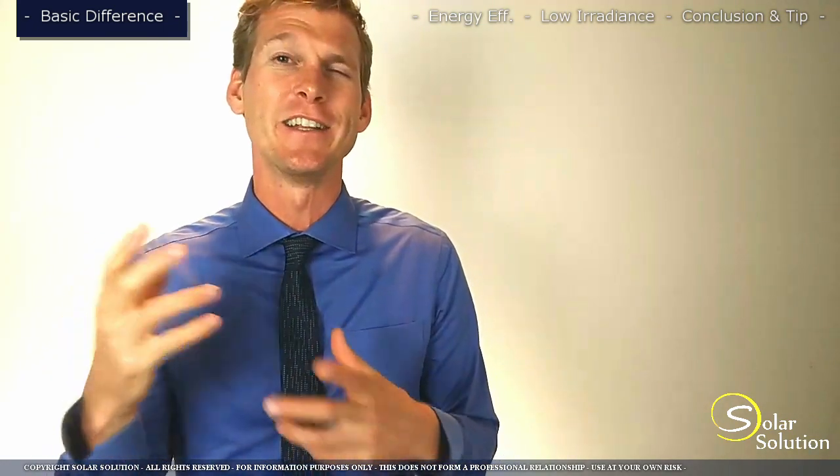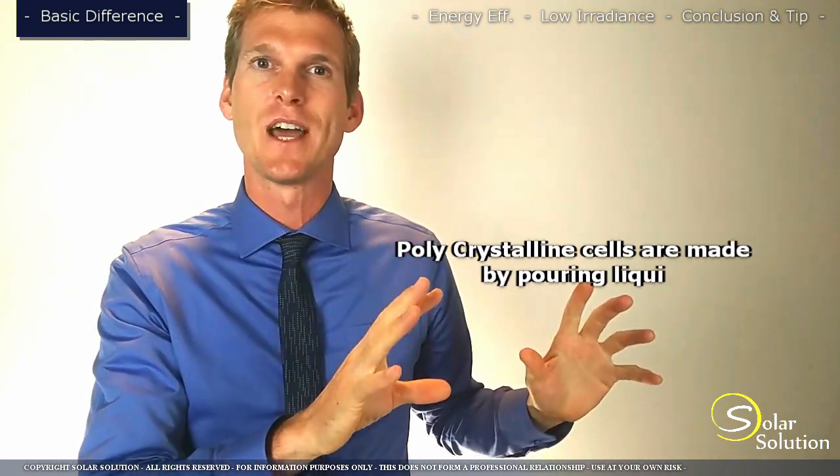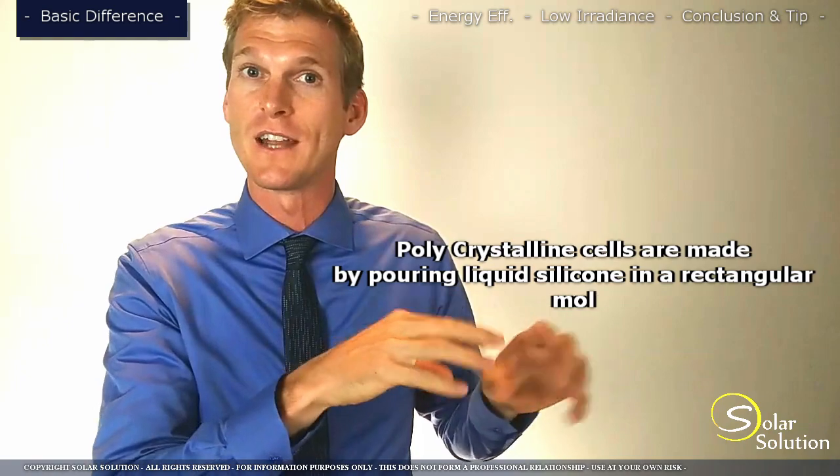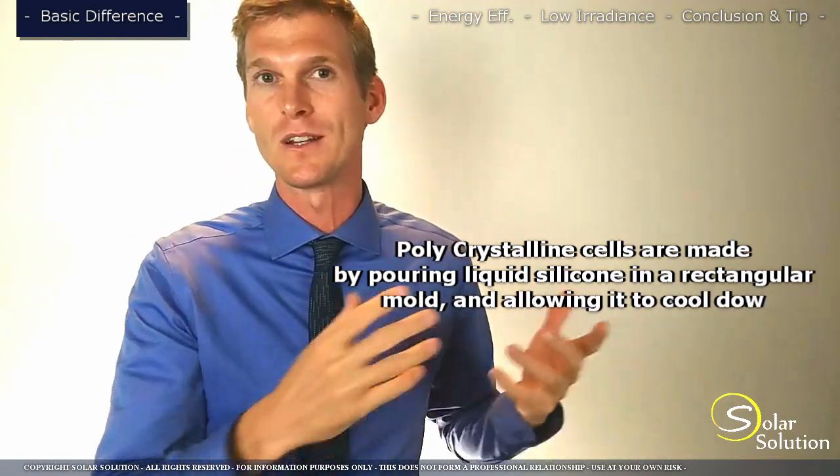In order to make polycrystalline cells they take the silicon and they do something that reminds me of making chocolate. So they melt down all the silicon, they've got this big rectangular shape and they pour the liquid silicon in there, and as the silicon cools down it hardens and it forms different kinds of crystals which forms the polycrystalline cell.